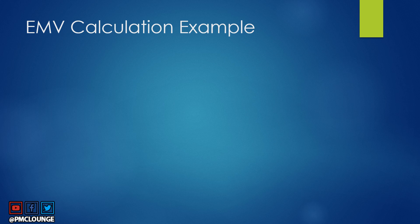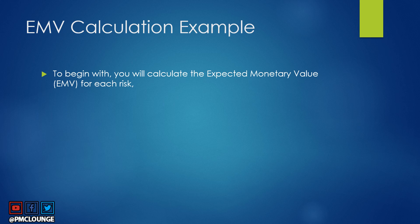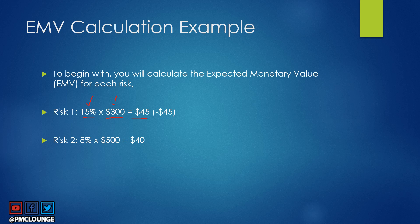Let's calculate EMV for each risk. Risk one: 15% probability × $300 cost = $45 EMV — this is negative because it is an additional cost. Risk two: 8% × $500 = $40 EMV — this is positive, and I'll explain why shortly. Risk three: 10% × $100 = $10 EMV — also negative because it is an additional cost.